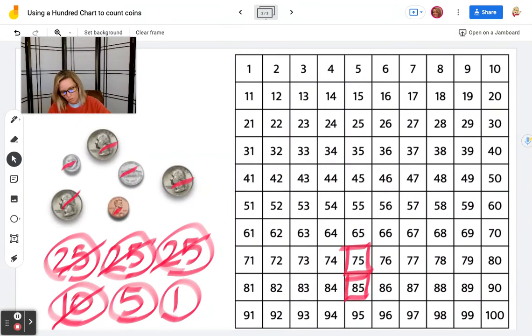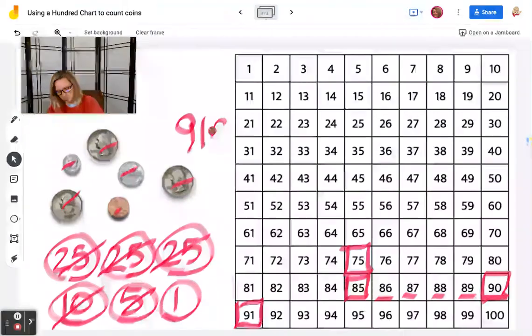Then we're going to go one, two, three, four, five to the right, 90 cents. And then one, 91 cents.